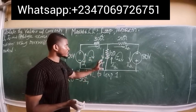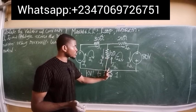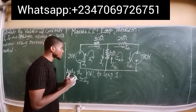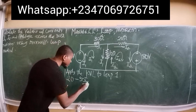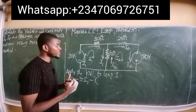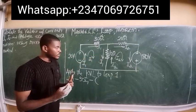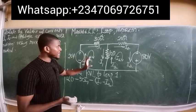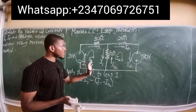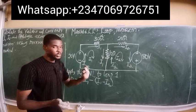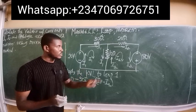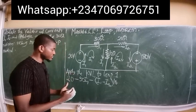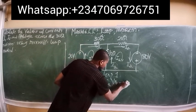Also observe that it's not just I1 flowing through this 10 ohm resistor — we also have current I2 flowing through the 10 ohm resistor in the opposite direction. But since we are on loop 1, current I1 always comes first. Whenever current flows through a resistor there is always a potential drop, so we put a negative sign, giving us minus 10 times (I1 minus I2). The sum of the entire loop equals zero.